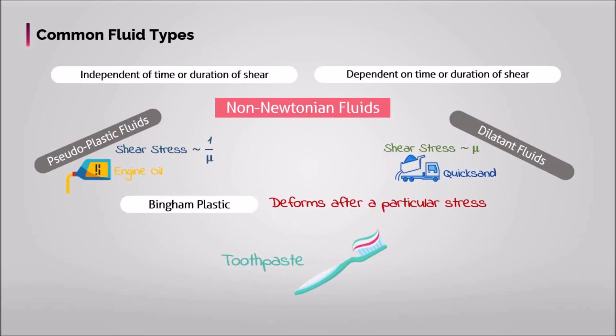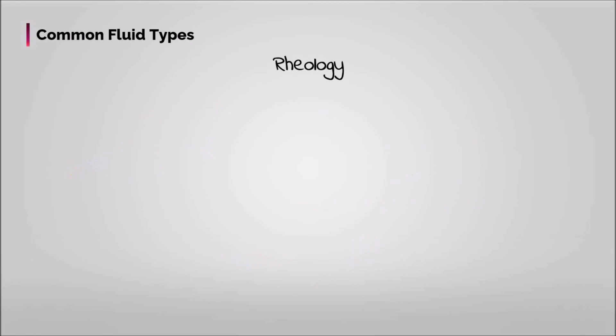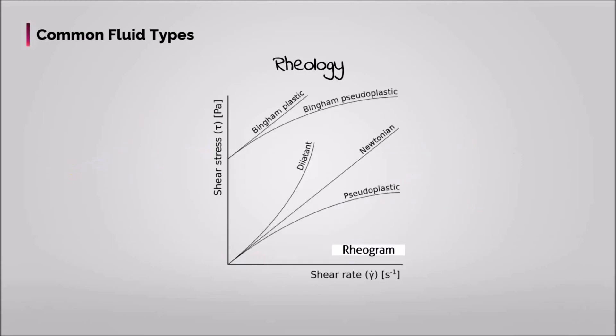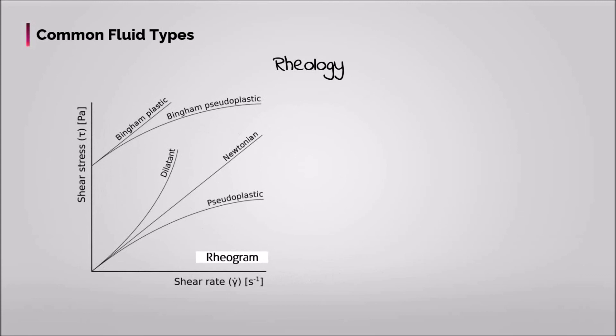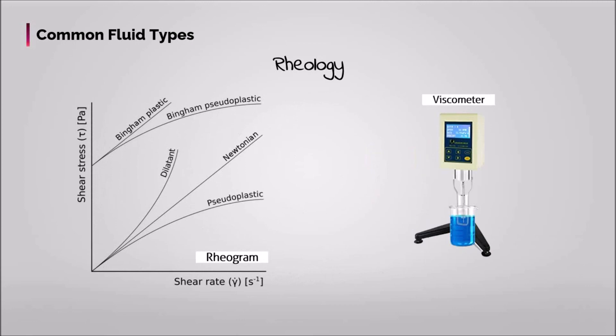The ability to obtain good quality physical properties, such as viscosity, from experimental results or correlations is an important aspect of engineering science. The study of fluid flow is called rheology. A plot of shear stress versus shear rate is known as a rheogram, or the study of a fluid's rheological properties. The instrument used to study the variation in shear stress with shear rate is called a rheometer, or more commonly, a viscometer.